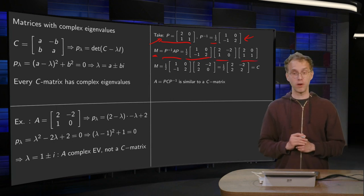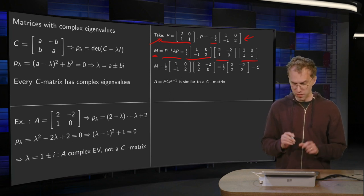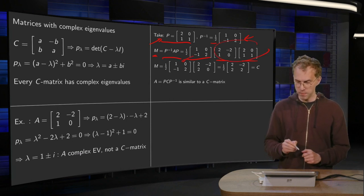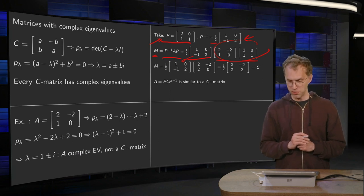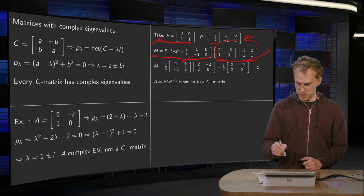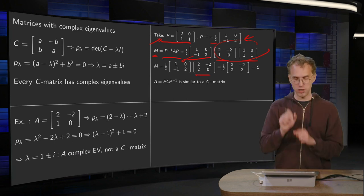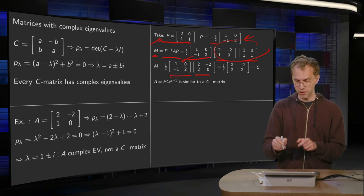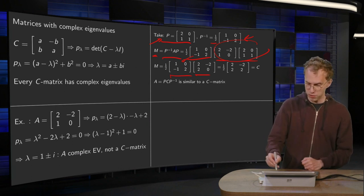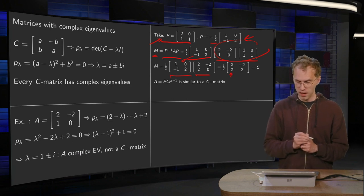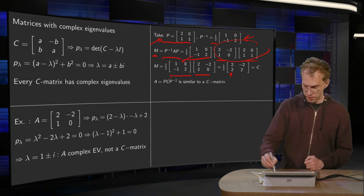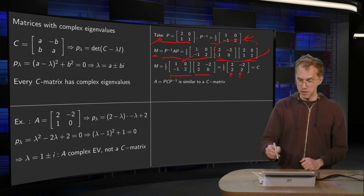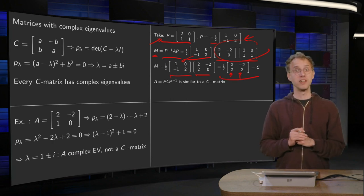We compute the product of the 2×2 matrices step by step using the row-column rule. First we do the last product A times P: the first element gives 4 − 2 = 2, then we get 2, −2, and 0. Then we multiply P⁻¹ by that result: 2 + 0 = 2, −2 + 4 = 2, giving a 2 here, and −2 and 2 there. Including the factor of one half, we get entries 1, 1, 1, and −1.